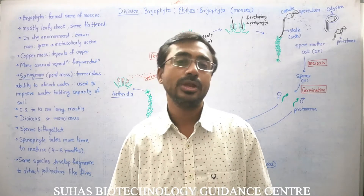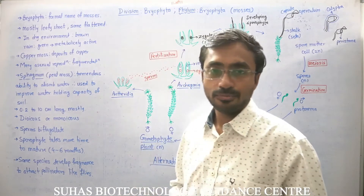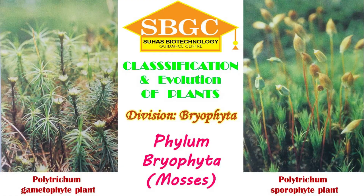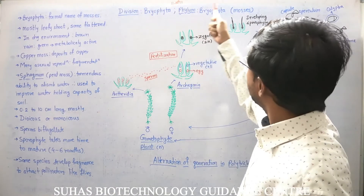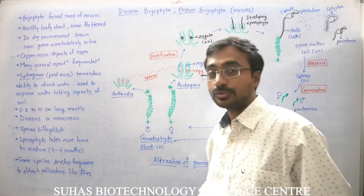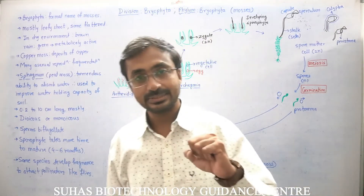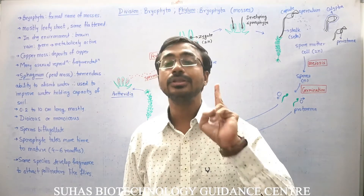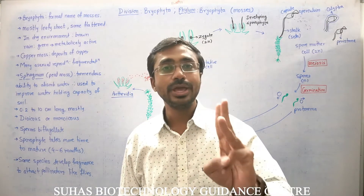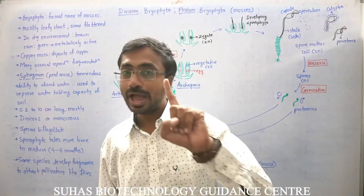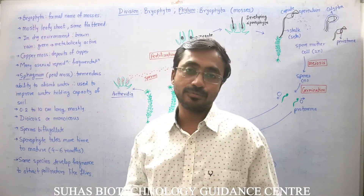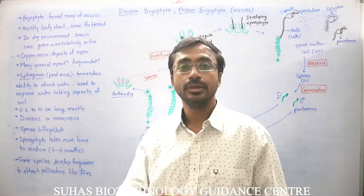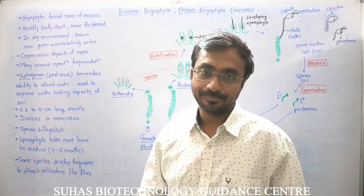Today we are going to move forward towards the third phylum in division Bryophyta, and this phylum is Phylum Bryophyta. We have already seen hornworts (Anthocerotophyta) and liverworts (Marchantiophyta), and today we cover Bryophyta. This phylum involves mosses, because 90% of the bryophytes are from Phylum Bryophyta — that is why this phylum got the name.